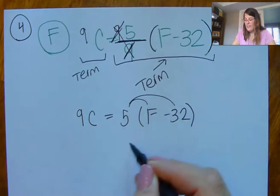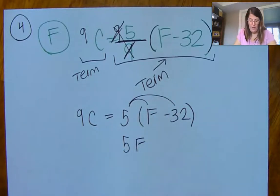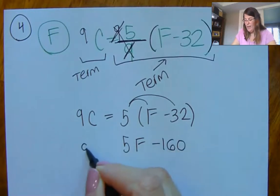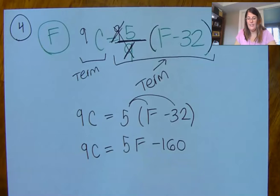Now I have parentheses, so I need to distribute. So five times 32 is 160. So I have 9C is equal to 5F minus 160.